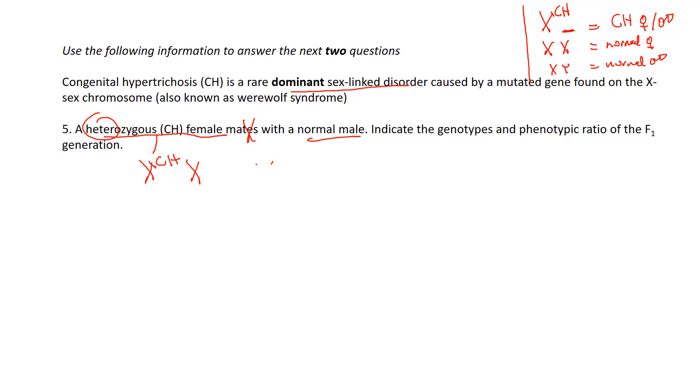Okay, crossed with a normal male. So normal male, just look at our legend. That's why we did it, X Y. And we just do our quick Punnett square for a monohybrid. Put the female on top, isolate those into gametes or eggs, isolate the male down the side, that's his sperm, and then bring them together, showing the dominant CH allele first.